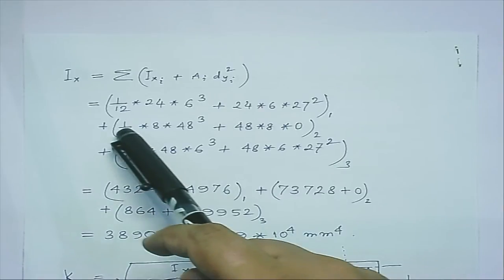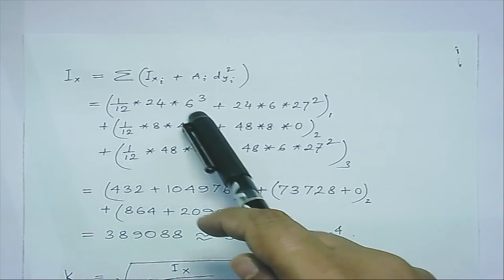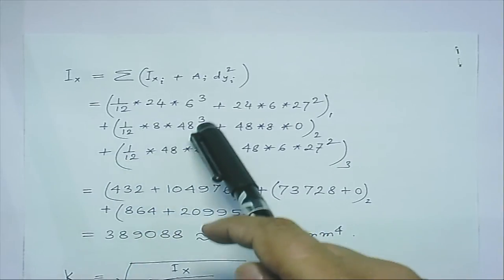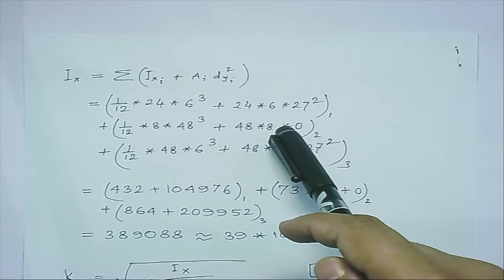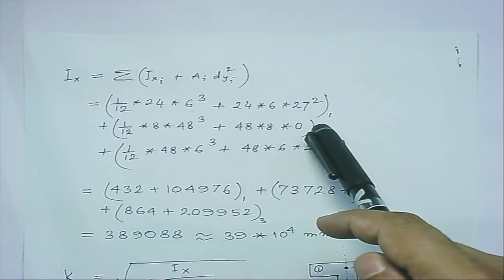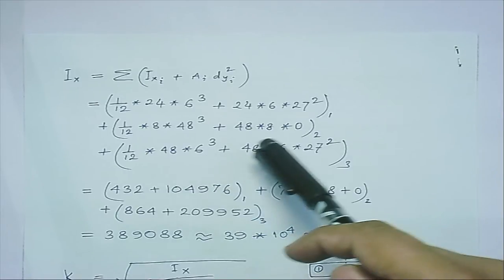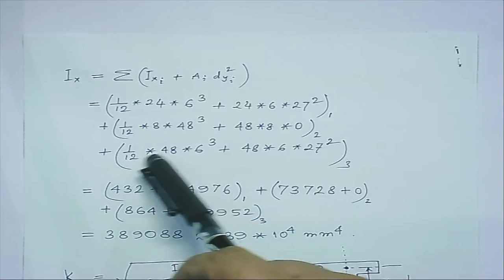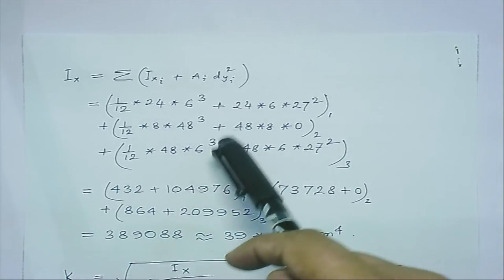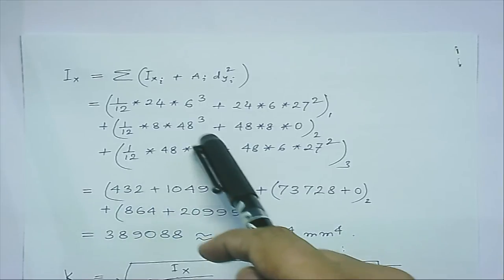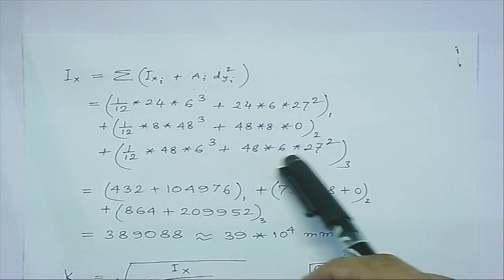Likewise, for the second area, you just have bh³/12. There is nothing to transfer because the centroidal axis coincides with the x-axis, so we put a 0 here. The third area again uses its own centroidal axis, then we transfer it.